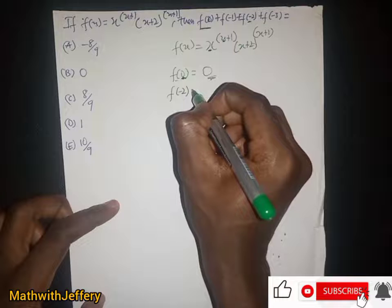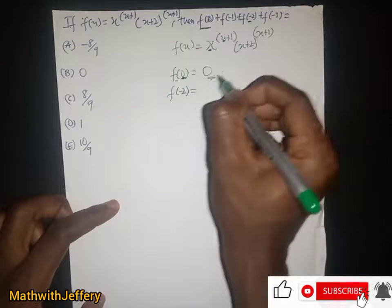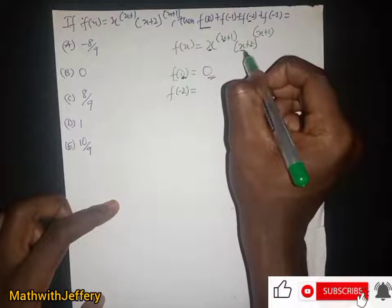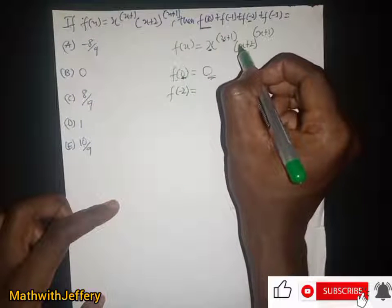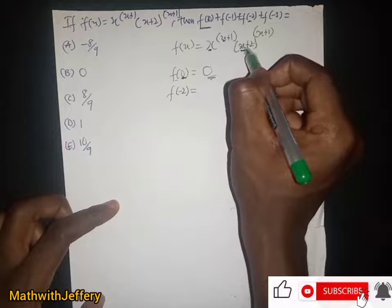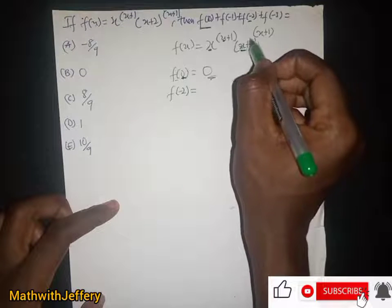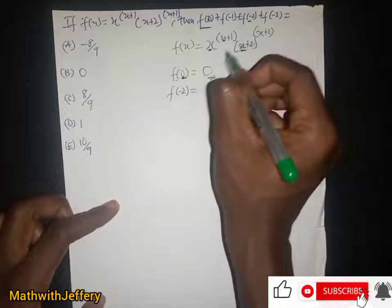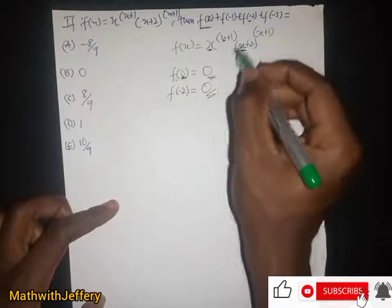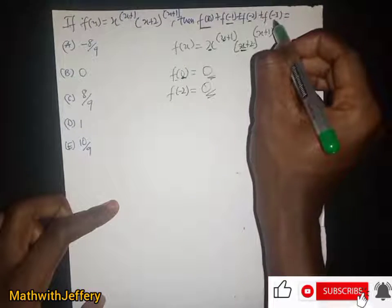Now let's check f(-2). When we put s = -2, this term goes to 0 and everything here also goes to 0. So f(-2) = 0 as well.